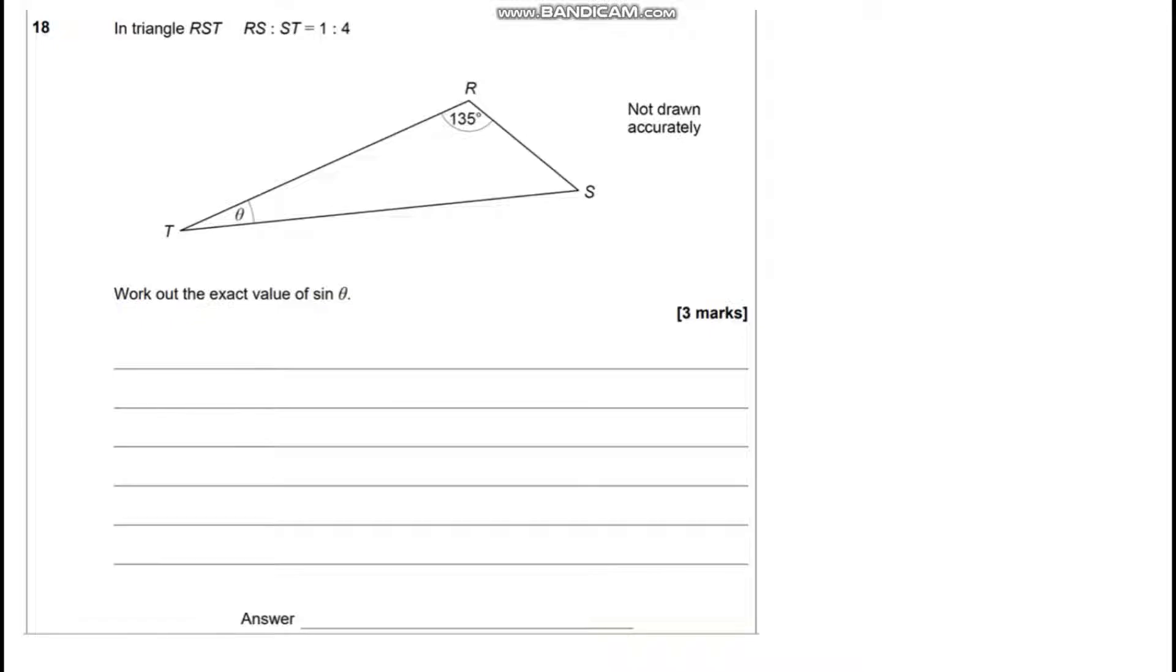In this video we're looking at question 18 of the 2022 Paper 1 for the Further Maths GCSE. We've been given a triangle RTS with one angle theta and one angle of 135.